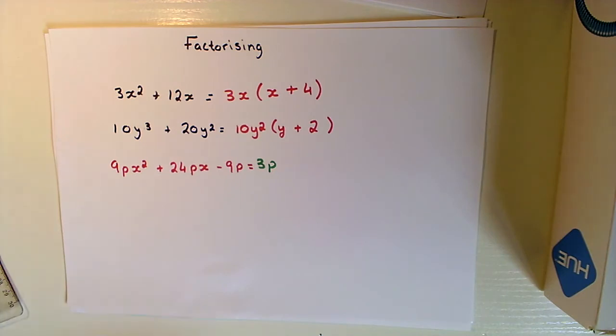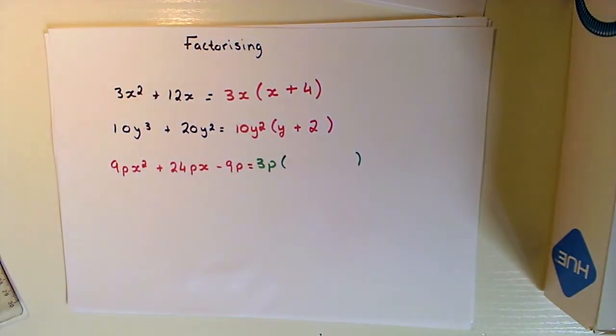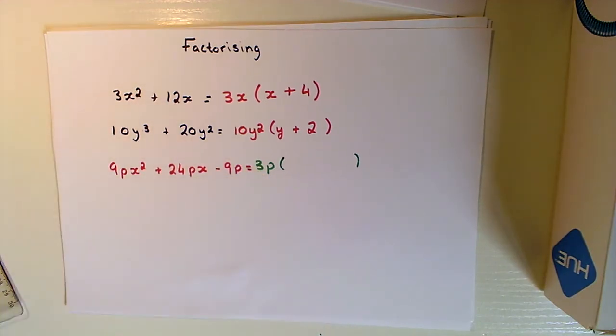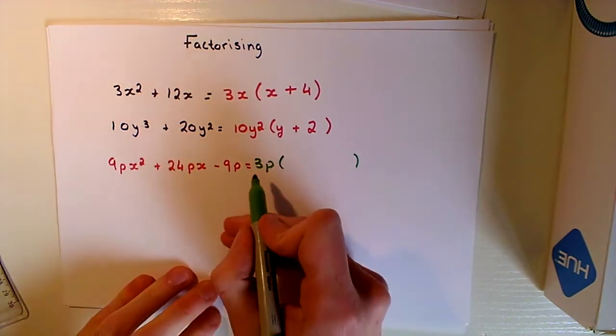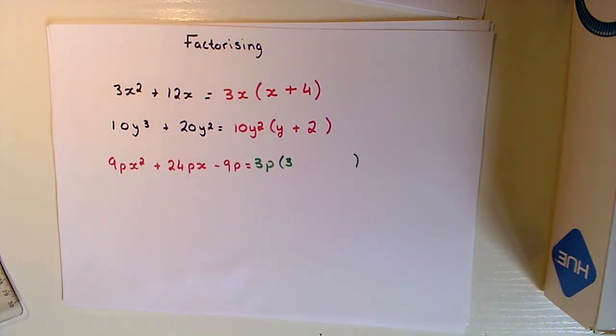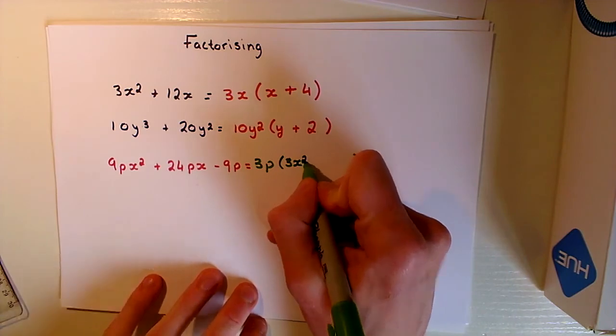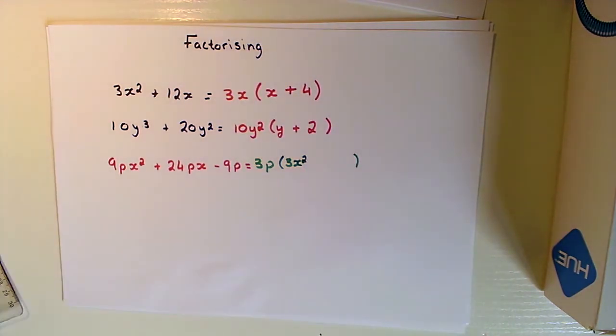If we were to take 3P out, let's consider our brackets at this point. I've taken 3P out of 9PX squared. Let's think about our coefficients. 3 times 3 would give me the 9. What do I need to multiply P by to give me PX squared? Well, I would have to multiply it by X squared.